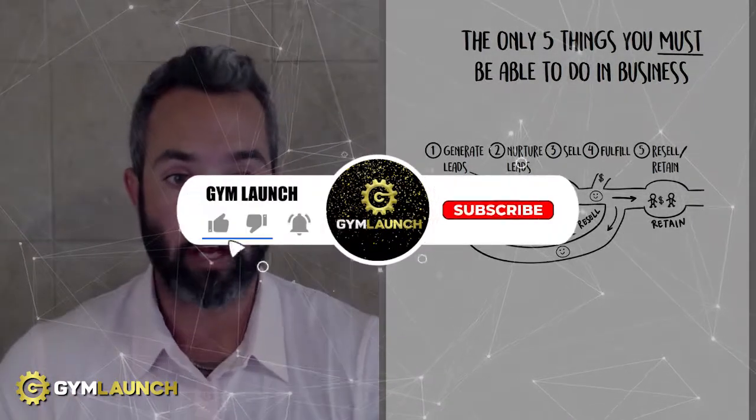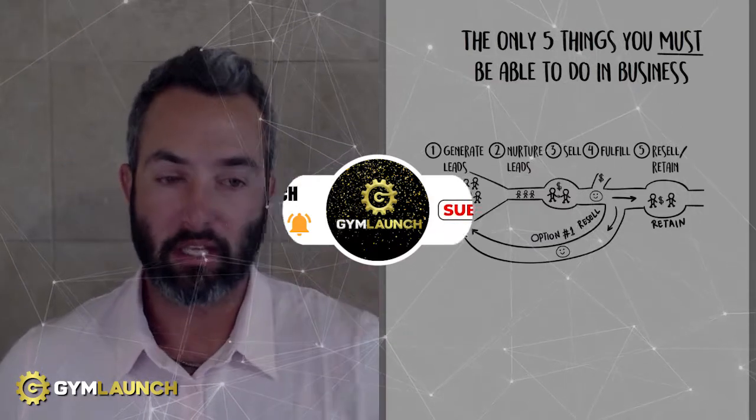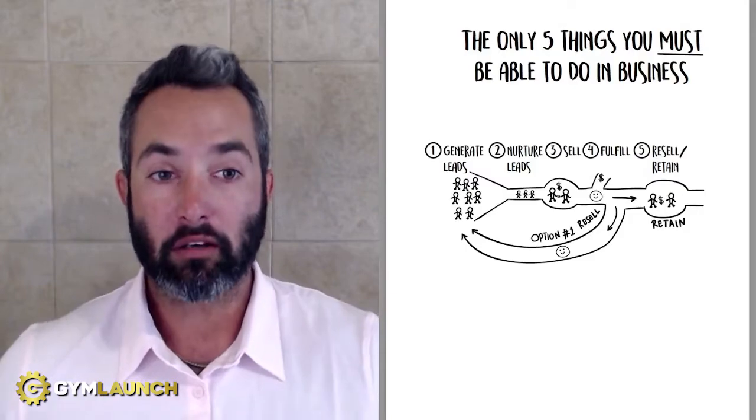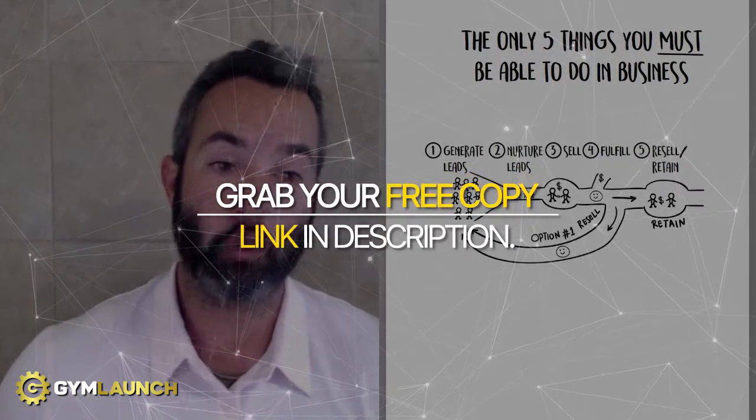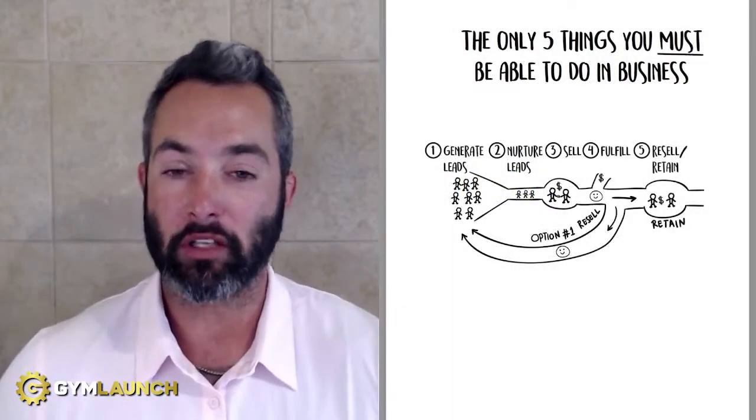If you found this at all valuable, I'd love it if you hit the like and drop a comment down below. But if you want more information like this, we put together a PDF called the seven money models we use to scale gyms to over a hundred thousand dollars a month like clockwork. It's completely free. It's down in the description. You can click that link, grab it, download it. And as always hit that subscribe button and I'll catch you on the next video.